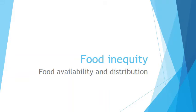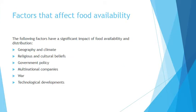Today we're continuing with our topic on food equity, looking at food availability and distribution around the world. The factors we'll be discussing today — and the points you need to make notes under — are geography and climate, religious and cultural beliefs, government policy, multinational companies, war, and technological development. These are the factors that affect how much food is available.